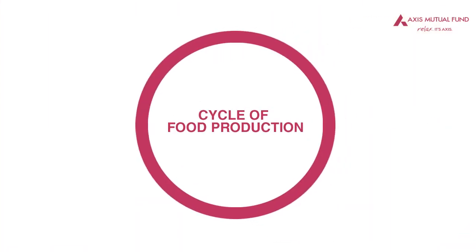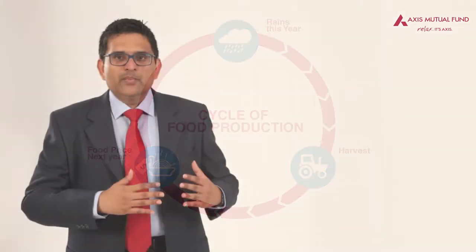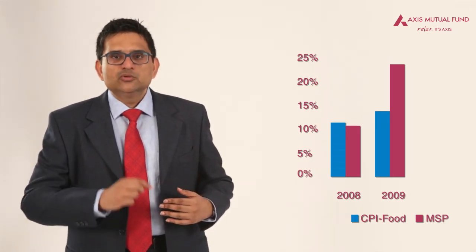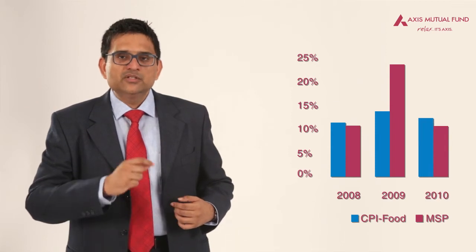Let's look at the cycle of food production. Rains this year lead to harvest at the end of the year. The monsoon is between July to September — that's when the sowing season is — harvest starts in December and onwards, and therefore it affects food prices in the following year. Thanks to the bad monsoon of 2009, one should have expected much higher food inflation in 2010. However, 2009 saw a much lower increase in MSPs compared to the previous year 2008, and consequently 2010 actually saw food inflation come down relative to the previous year.